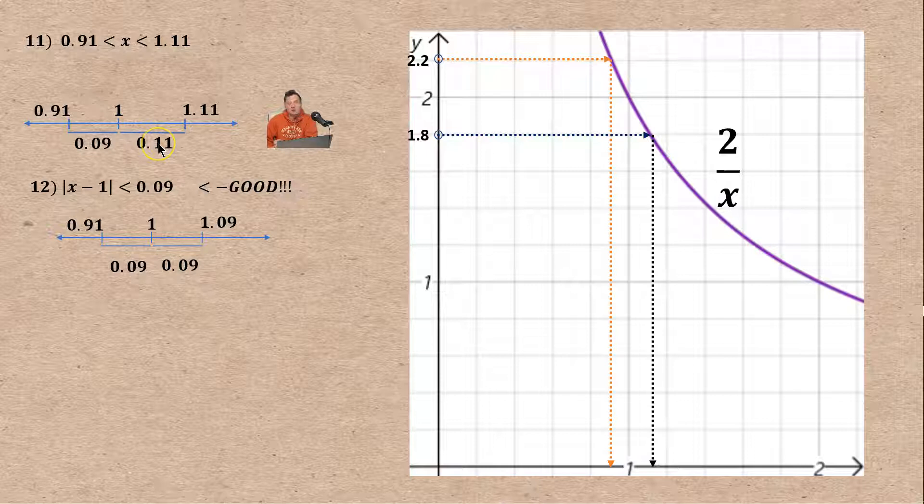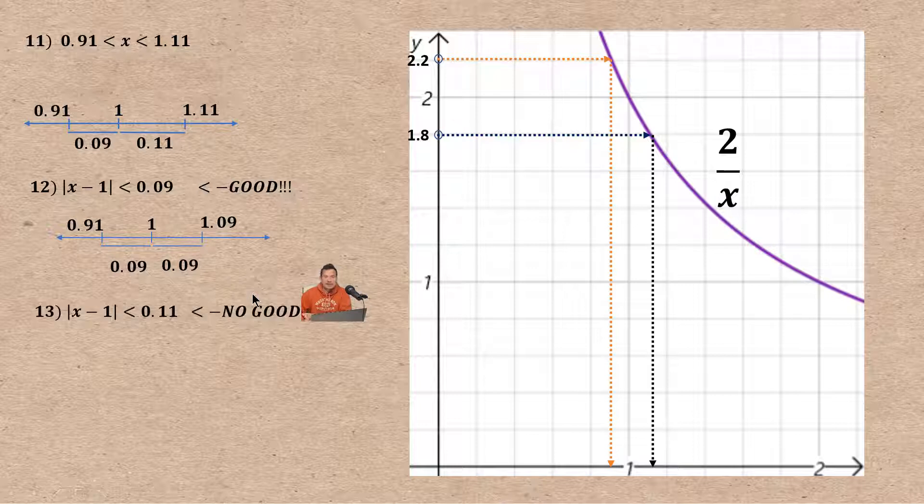This is the good delta but let's see why the 0.11 would be the bad delta. We've got to understand that. I'm going to say x minus 1 in absolute value is less than 0.11. This one's no good. Let's draw a picture.